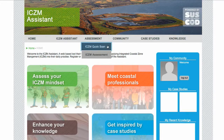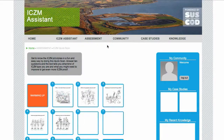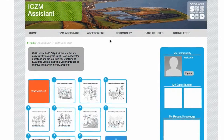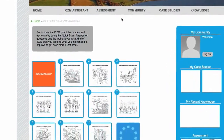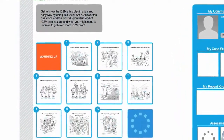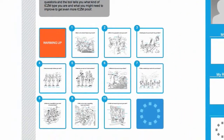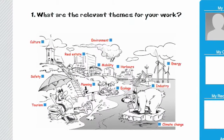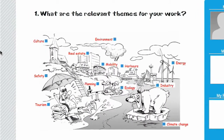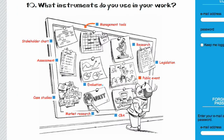The Quick Scan is a brief questionnaire that is fun and easy to fill out. By answering 10 illustrated questions, the tool tells you what kind of ICZM type you are and what you could improve to get even more ICZM experienced.